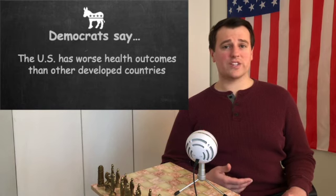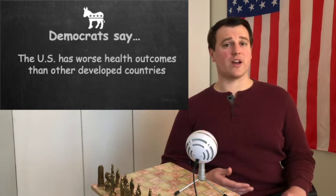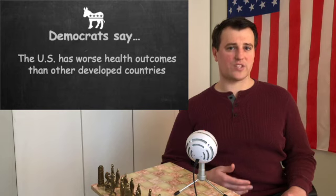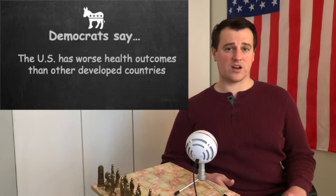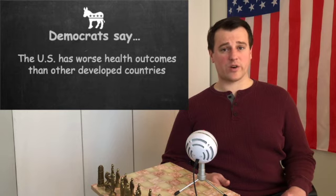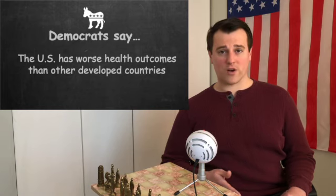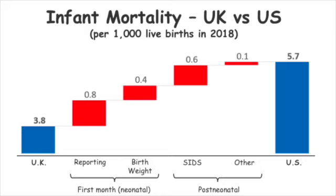As far as outcomes go, politicians repeat that we have worse health outcomes than other major countries despite our healthcare spending. They typically refer to infant mortality and life expectancy. If you just look at these two numbers, we are significantly behind the pack. I've got waterfall charts comparing the US specifically to the United Kingdom. On infant mortality, the UK is at 3.8 deaths per thousand live births and we're at 5.7. The biggest factor is reporting differences — we count births that other countries don't — which is good news for the US, though that still leaves about 60% of the gap.